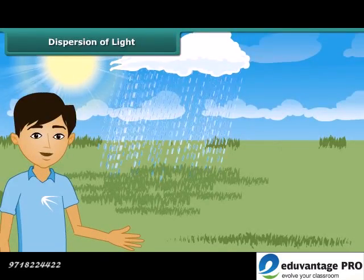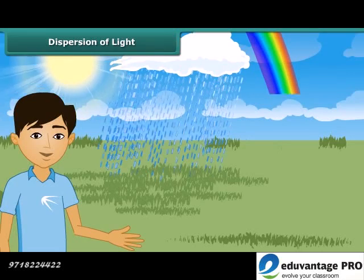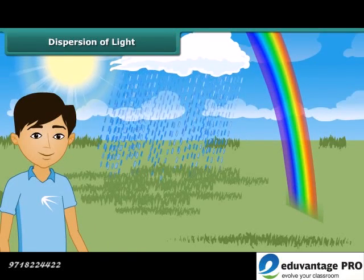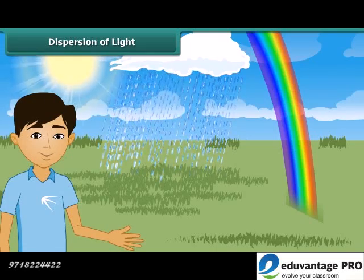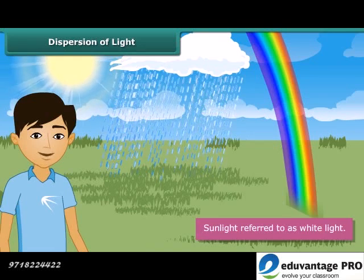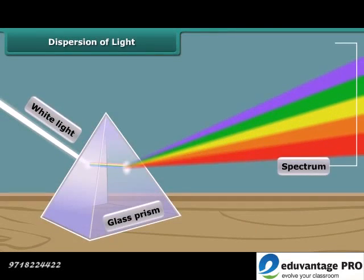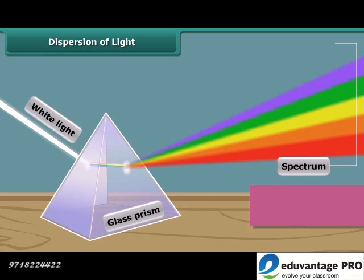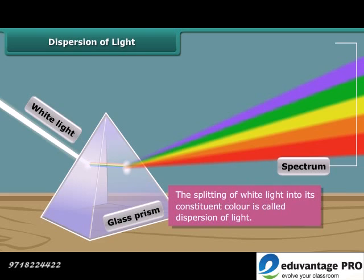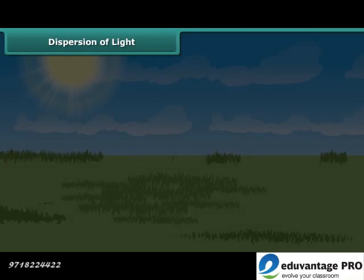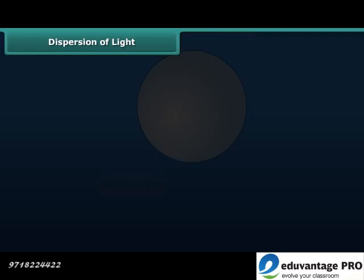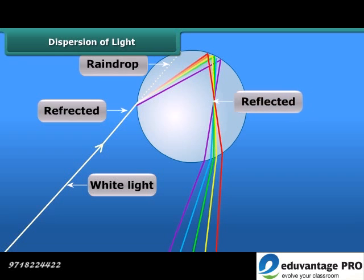What do we observe in the sky after rainfall? Yes, a beautiful multicolored rainbow. We know that sunlight is referred to as white light. When this light passes through a glass prism, it splits into seven colors — it means that the beam of white light has split up into its constituent colors. This phenomenon of splitting of white light into its constituent colors is called the dispersion of light. The dispersion of white light passing through water droplets is what forms the rainbow.